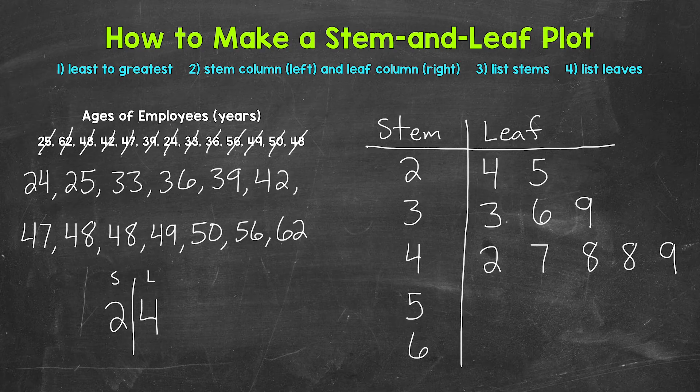Now we have 50, so we need to move down to the stem of 5: stem of 5, leaf of 0. Then 56: stem of 5, leaf of 6. And then lastly we have 62: stem of 6, leaf of 2. And that's it for our leaves.